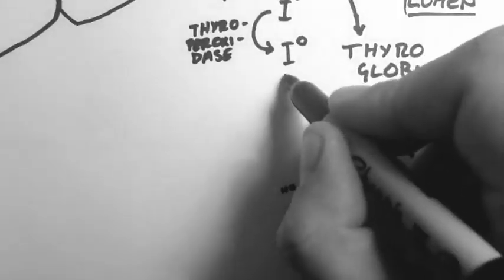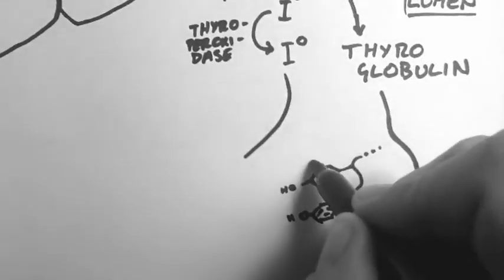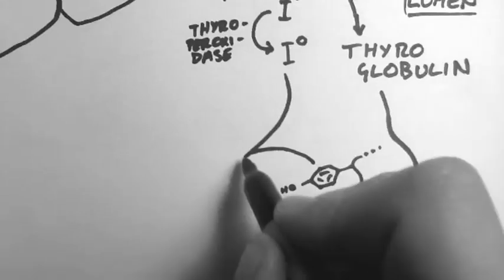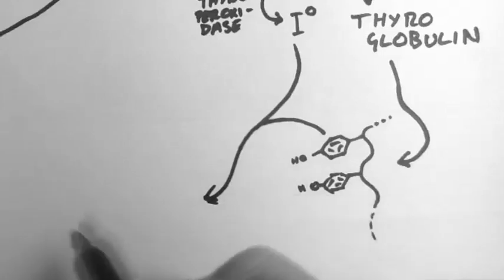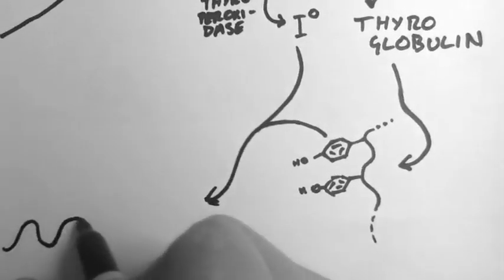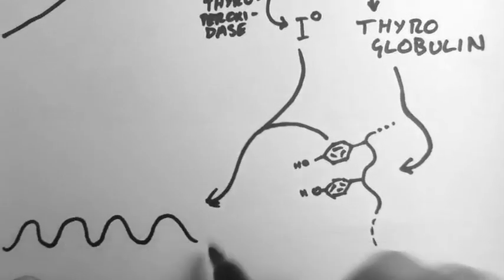Now, along with the thyroglobulin, these come together, and the iodine attaches to various spots on the thyroglobulin. And it attaches to these tyrosine rings, and it can do this in one of two ways.